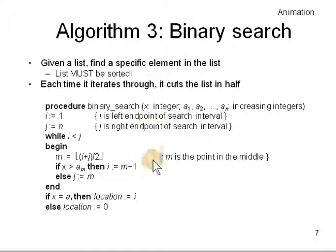So this algorithm, you are looking for x in a1 to an in increasing order. Then you will set left endpoint i equals 1 and the right endpoint j equals n. And while i is less than j you keep finding the midpoint m equals floor of i plus j by 2.